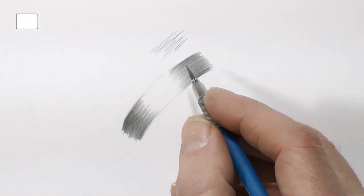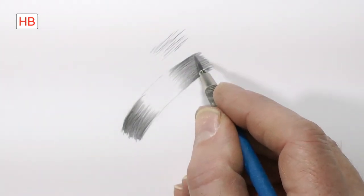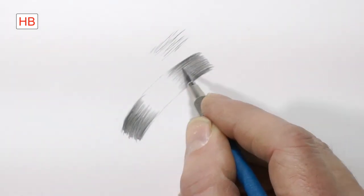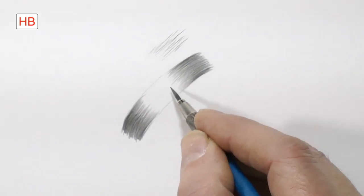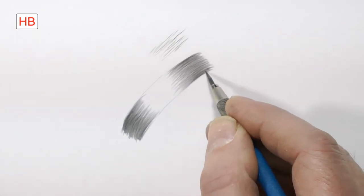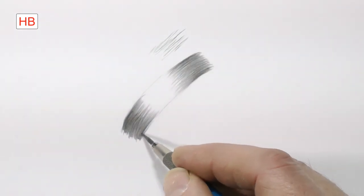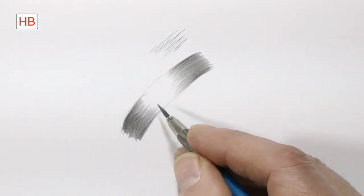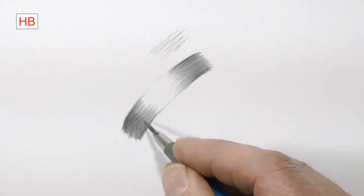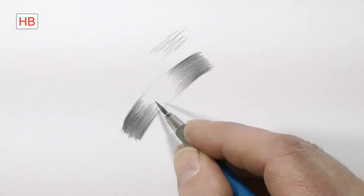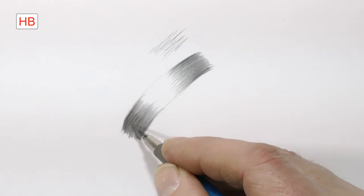So we'll change from 2B to HB. HB has more clay in the mix, so it draws with a smoother finish. And we'll gradually extend that further and further towards the highlights. Every layer is just a little bit.